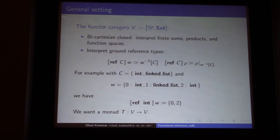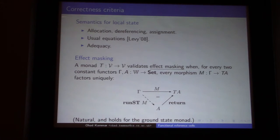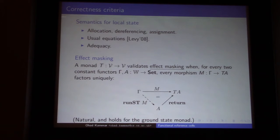What we want in order to address the question I asked is a monad over this category of presheaves. How do you know we have the right monad? We want to be able to interpret the operations for reference cells: allocation, referencing, and assignment. We have some equations we want to validate — Levy from 2008 has a nice list of them. And we want it to be adequate with respect to some operational semantics. But we don't really know what all the equations should be. So I was thinking about what would be the simplest property I would like from local state — and that was effect masking.